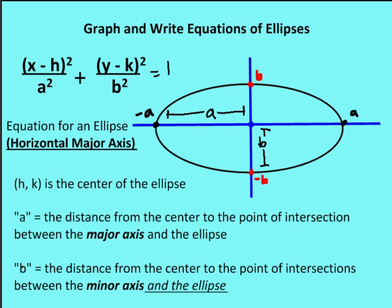Before we get started, let's review some things we talked about when we covered the basics of ellipses. We talked about the formula for a horizontal major axis: x minus h squared over a squared plus y minus k squared over b squared equals 1, where h and k are the center of the ellipse. a squared is the largest value denominator, b squared is less than a squared, and a is the distance from the center to the vertices.